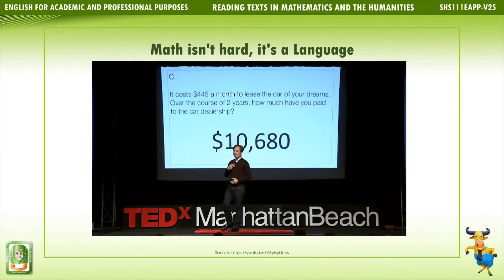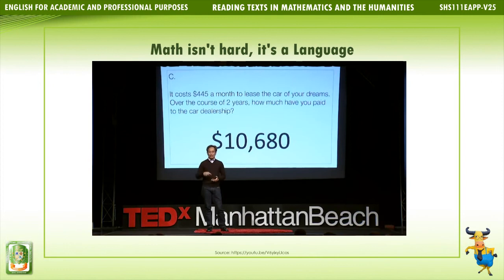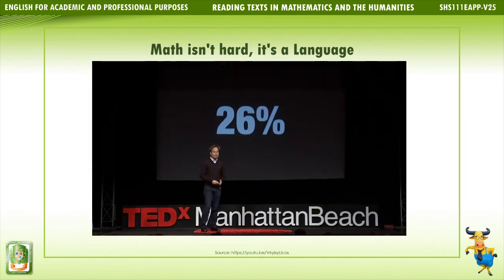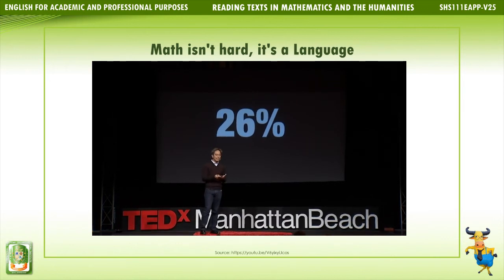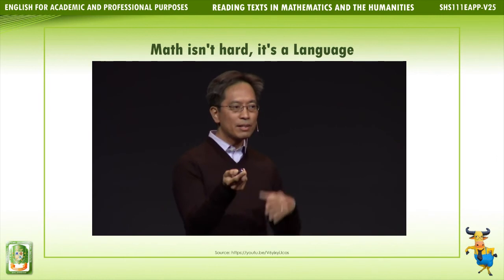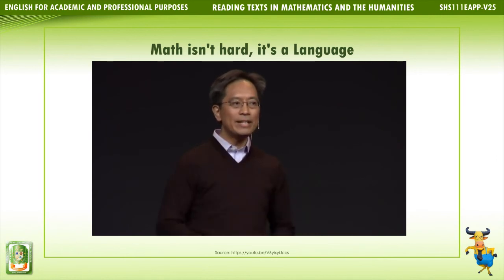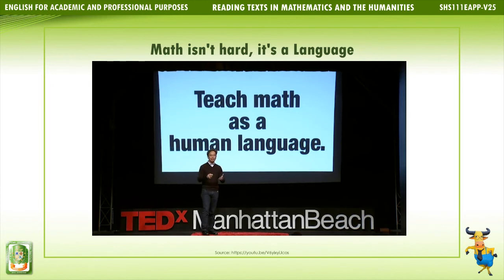As an educator, it's my duty to challenge kids to reach higher. So I leave you with this challenge: our country is stuck at 26% proficient, and I challenge you to push that number higher. This is important because mathematical thinking not only builds young minds, but our kids need it to imagine and build a future that doesn't yet exist. Meeting this challenge can be as simple as apples plus apples. Insist that we teach math as a human language, and we will get there sooner rather than later. Thank you.